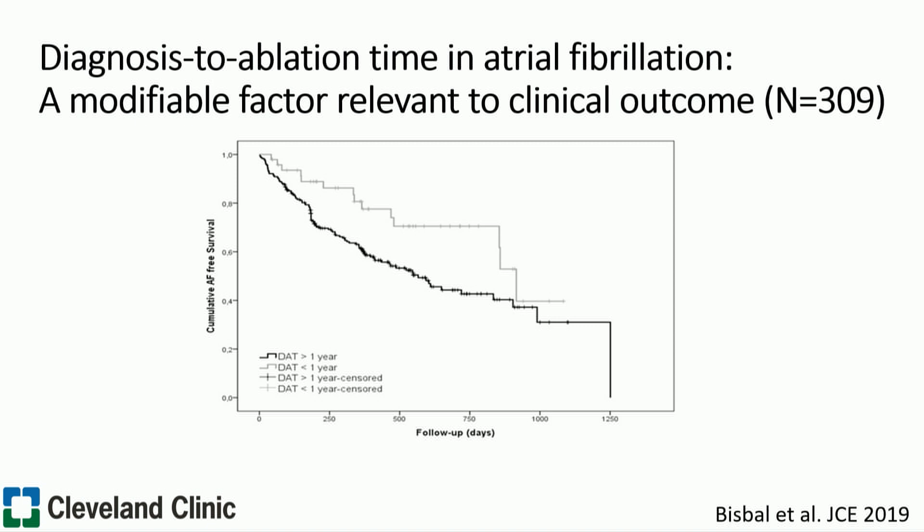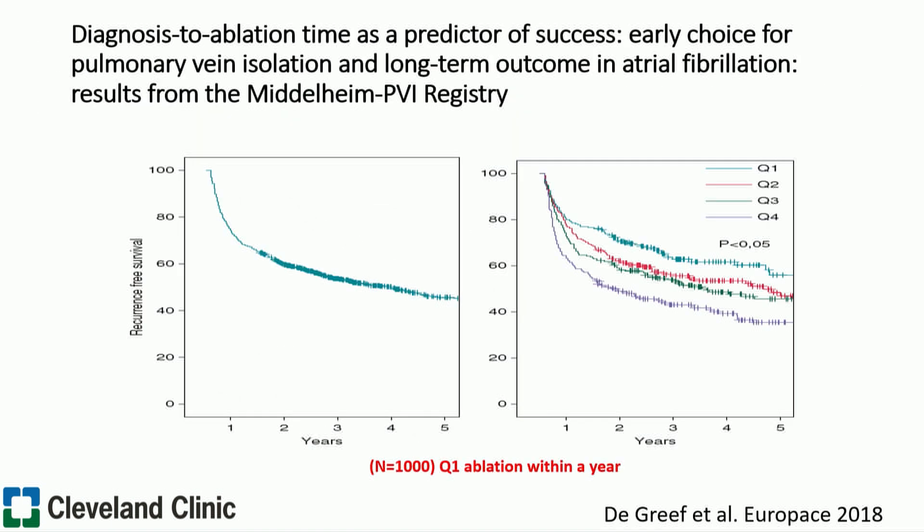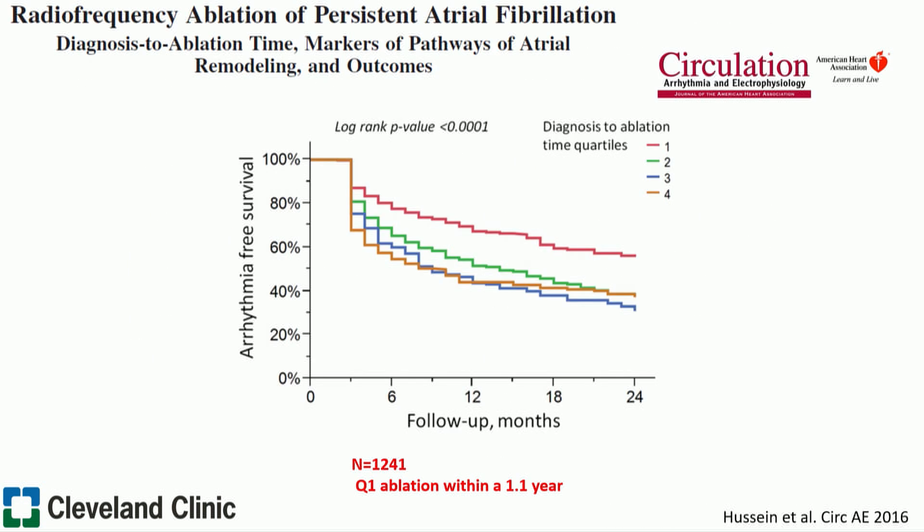Another smaller European study reproduced the same findings in a different population, showing that early ablation — defined as one year or less — is associated with better outcomes. These studies so far have included both paroxysmal and persistent patients. Another European study with both paroxysmal and persistent patients also showed better outcomes with early ablation. The question is: what about patients with persistent AFib, those in whom AFib had already progressed from an intermittent and rare form to a more sustained and difficult-to-treat form?